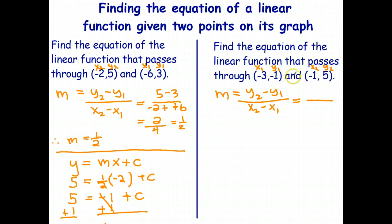y2 take y1 is 5 subtract negative 1. x2 take x1 is negative 1 subtract negative 3. And subtracting a negative is the same as adding a positive. Subtracting a negative is the same as adding a positive. And our gradient will be 5 plus 1 is 6. Negative 1 plus 3 is positive 2. And therefore, our gradient is 3.